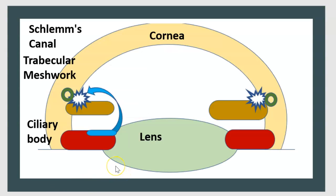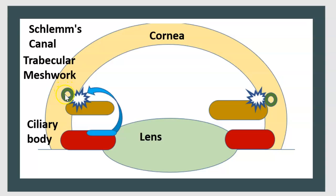To understand glaucoma, we need an anatomical overview of the eye. Here is the cornea and here the lens. There is the ciliary body, here is the trabecular meshwork, and here is the Schlemm's canal.